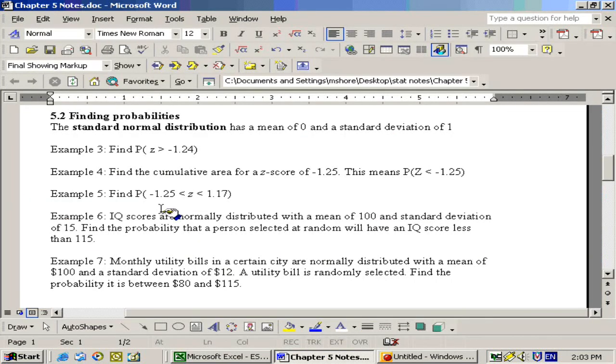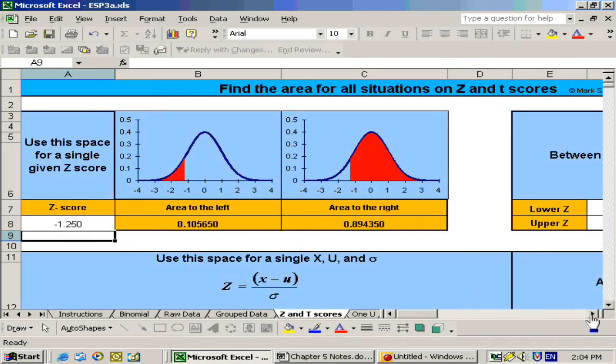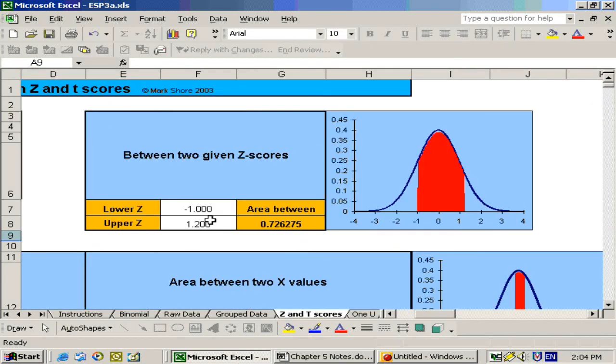The next problem asks what's the probability somebody has a z-score between negative 1.25 and 1.17. We would just put those two values in over here on the right, the lower one which was negative 1.25, and the upper one which was 1.17, and we would get our answer right here in this shaded region that we're talking about.